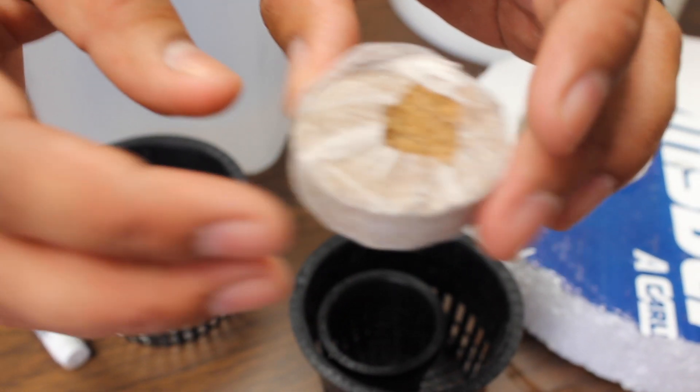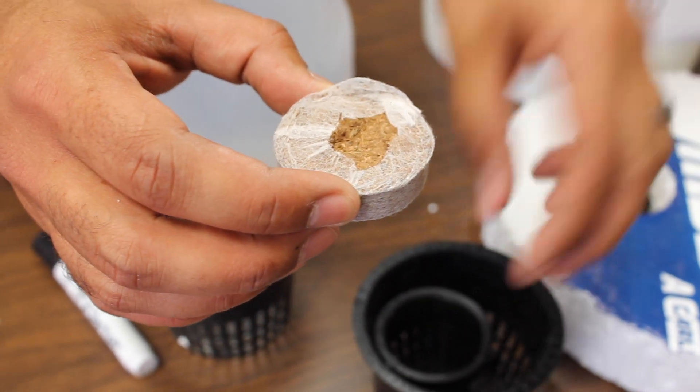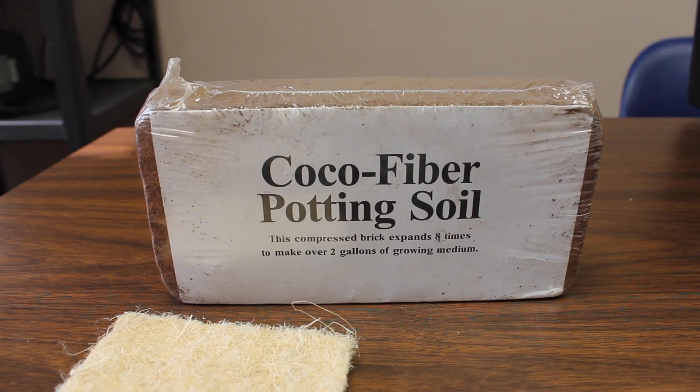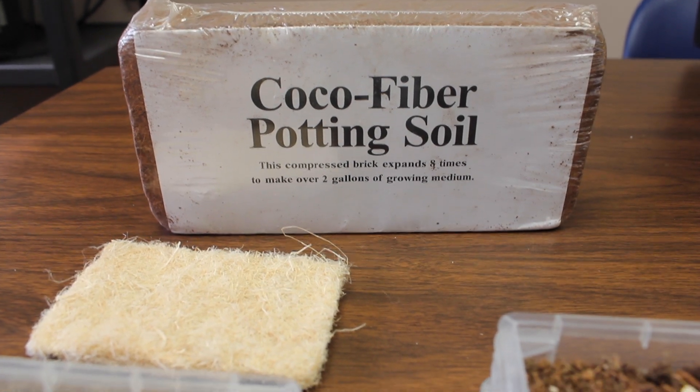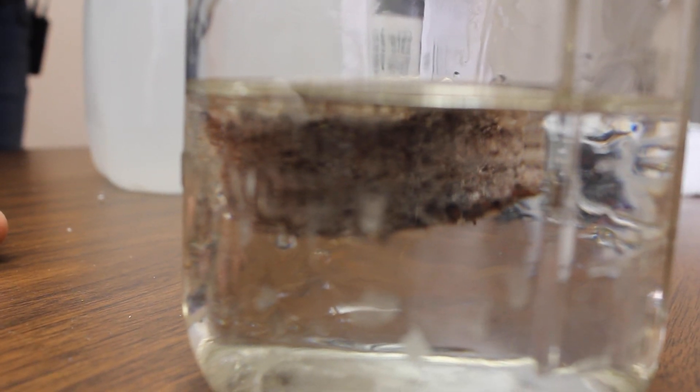What I use here is cocoa fiber. I like it because it comes in pellets like the ones you're seeing in the video here. It also comes in a brick. You put it in water and it's going to swell and you're going to have a lot of media there.